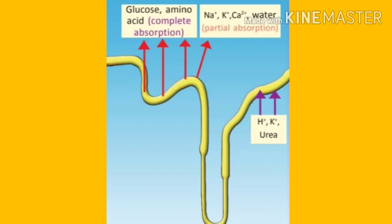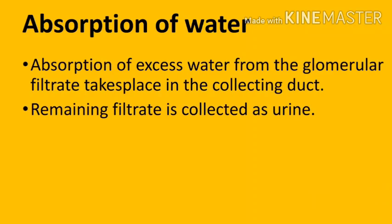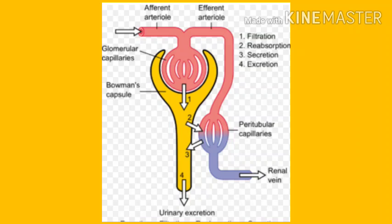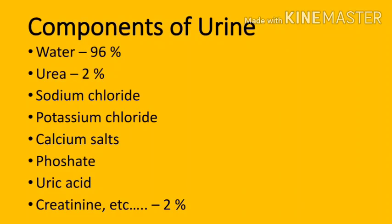The third process involved in urine formation is absorption of water. Absorption of excess water from the glomerular filtrate takes place in the collecting duct, and the remaining filtrate is collected as urine.